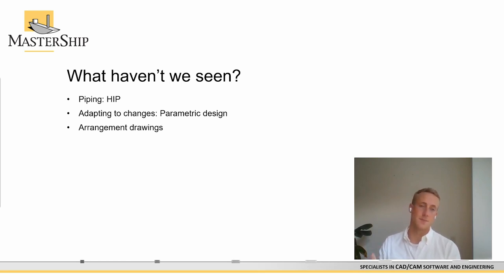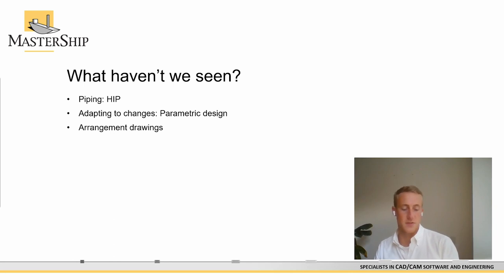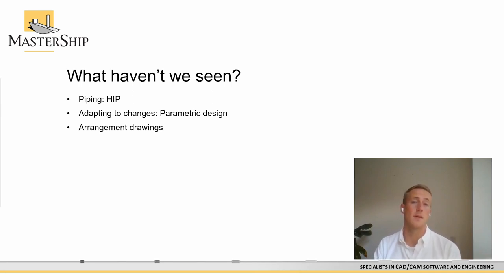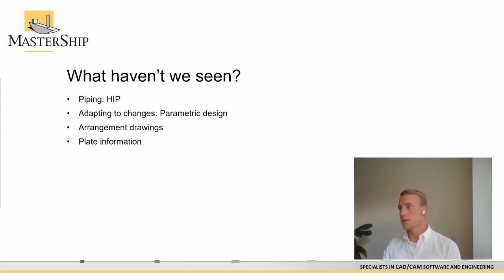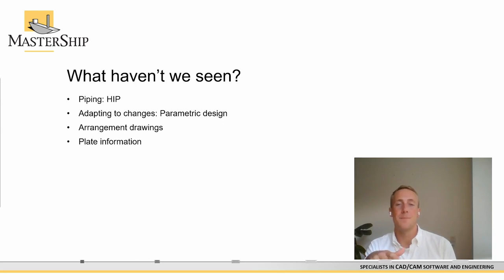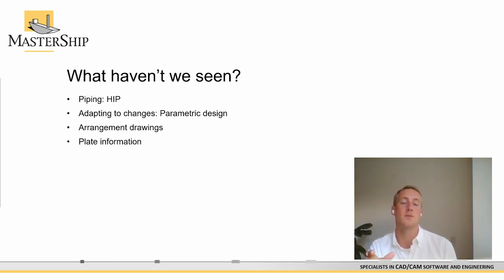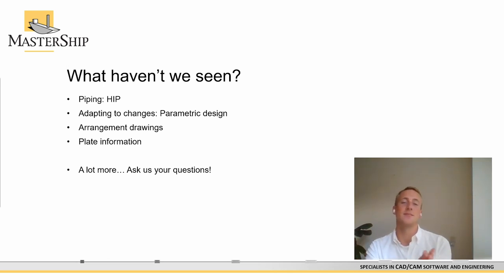We also haven't seen arrangement drawings — a slice through the model from which a drawing is automatically generated. This can be used to communicate or verify whether an external part will fit. We haven't seen how to import external parts such as an engine, pump, or piping into your MasterShip model. Finally, we haven't seen plate nesting information — how efficient the nesting was done. In our demo we didn't do it very efficiently due to having many big parts and few small ones.